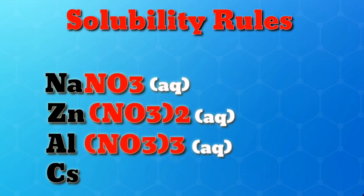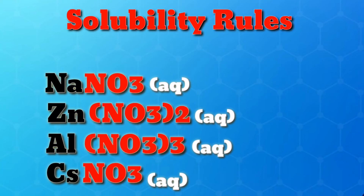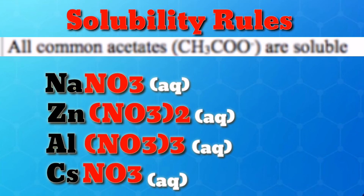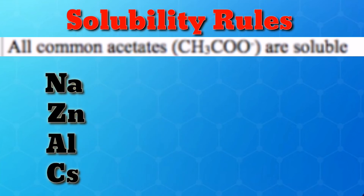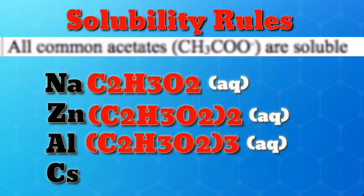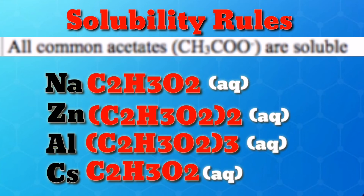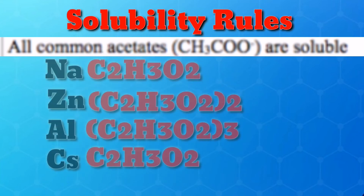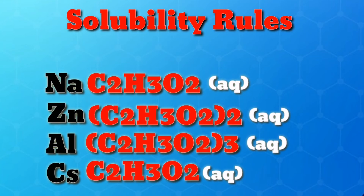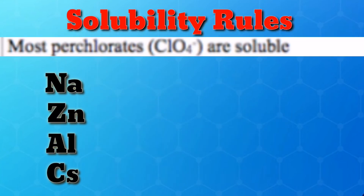Rule 3: All common acetates are soluble. Using the same metal cations but changing the polyatomic anions to acetate, examples include: sodium acetate, zinc acetate, aluminum acetate, cesium acetate, and all other compounds containing acetate. All are soluble.